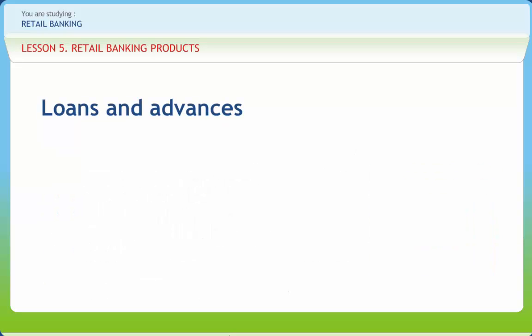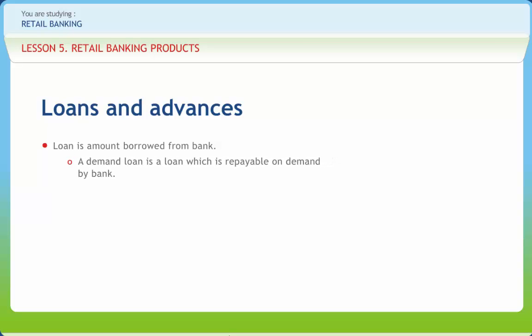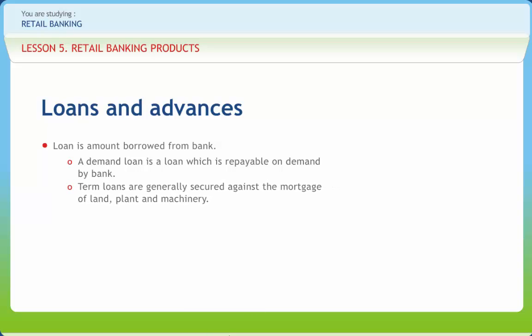A term loan refers to the amount borrowed by one person from another. The amount is in the nature of a loan and refers to the sum paid to the borrower. A loan is the amount borrowed from the bank where the money is dispersed and recovery is made in installments. A demand loan is a loan which is repayable on demand by the bank — in other words, it is repayable at short notice. Medium and long-term loans are called term loans, granted for more than a year, and repayment is spread over a longer period.